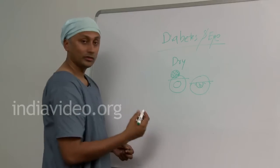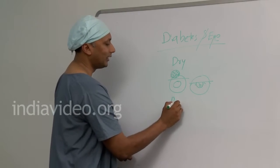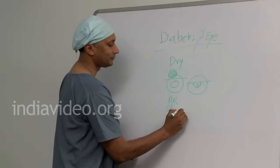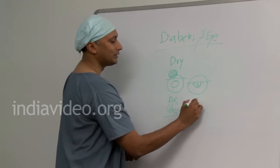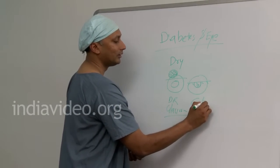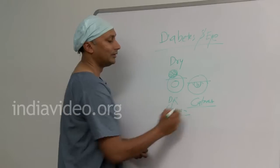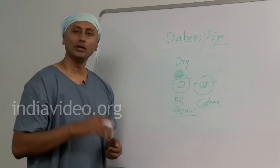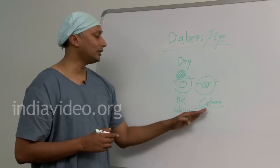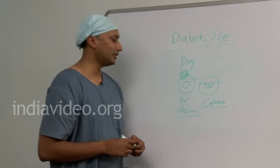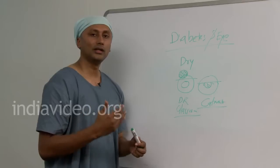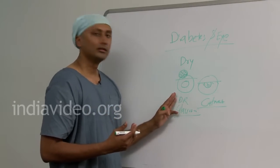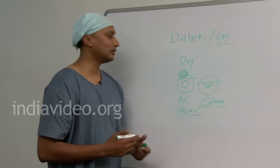Diabetes can also cause blinding diseases like diabetic retinopathy or glaucoma. Diabetes is also a leading cause of cataract, which is now seen in diabetic people at the age of 50 or lesser — the normal age for cataract development is 70. So a diabetic person with cataract has to undergo cataract surgery very early in order to treat diabetic retinopathy or glaucoma under these conditions.